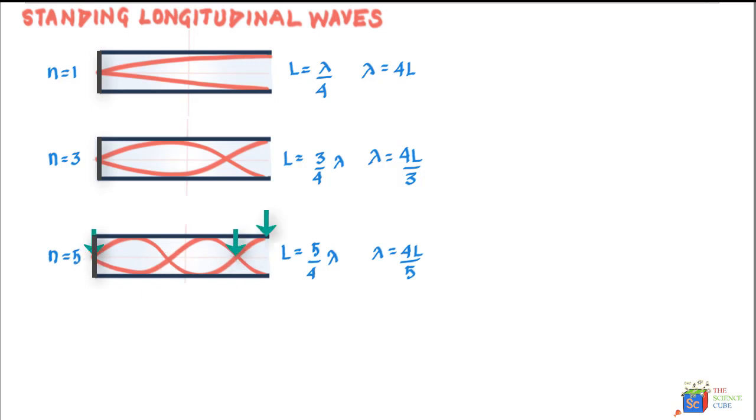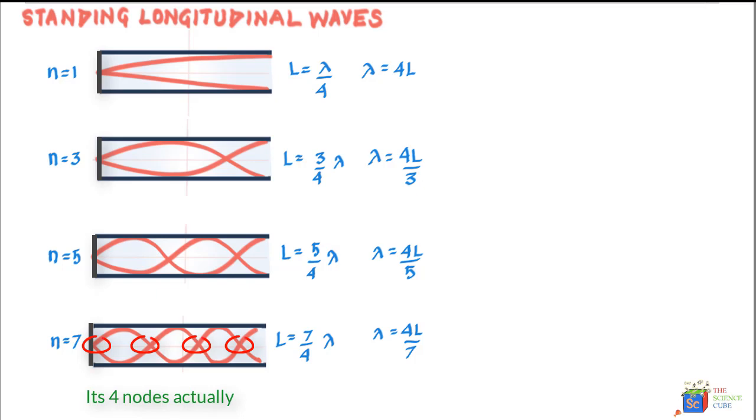You would have guessed by now seeing the pattern if there are 3 nodes L should equal to 4L upon 7. So, for standing waves to form in a tube that has one closed end, lambda should equal to 4L upon N where N is equal to 1, 3, 5, 7 and so on. That is odd numbers.